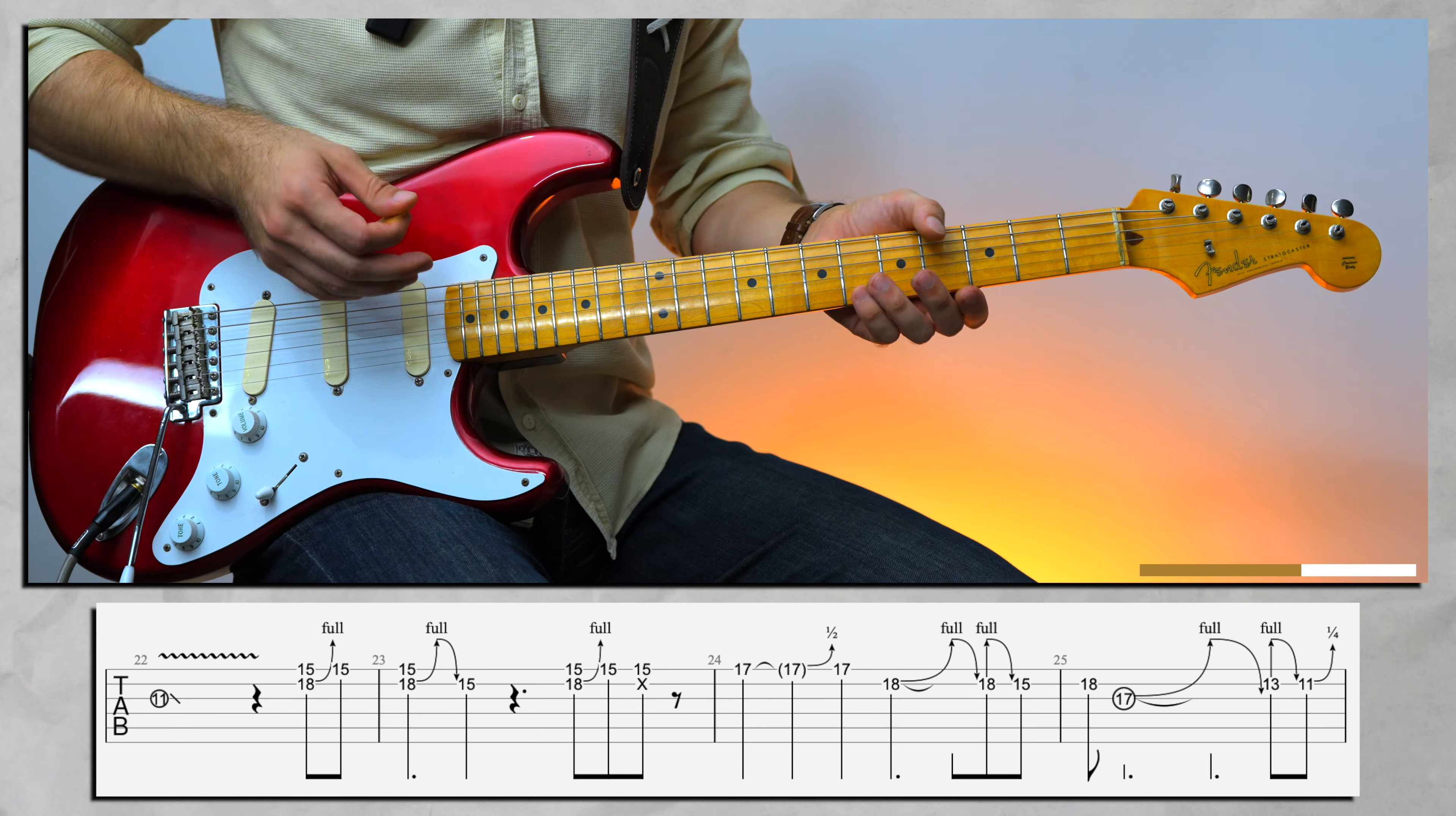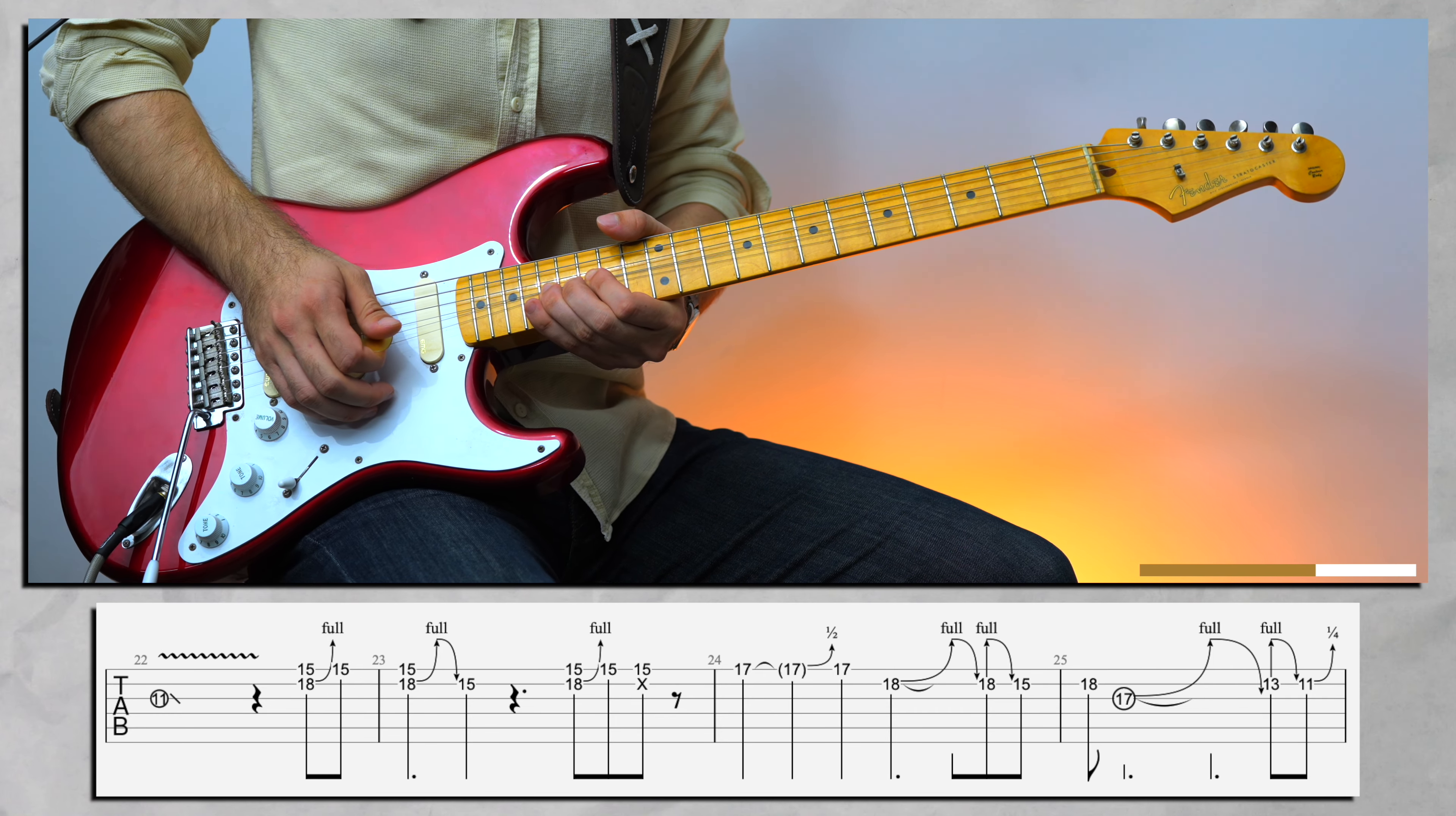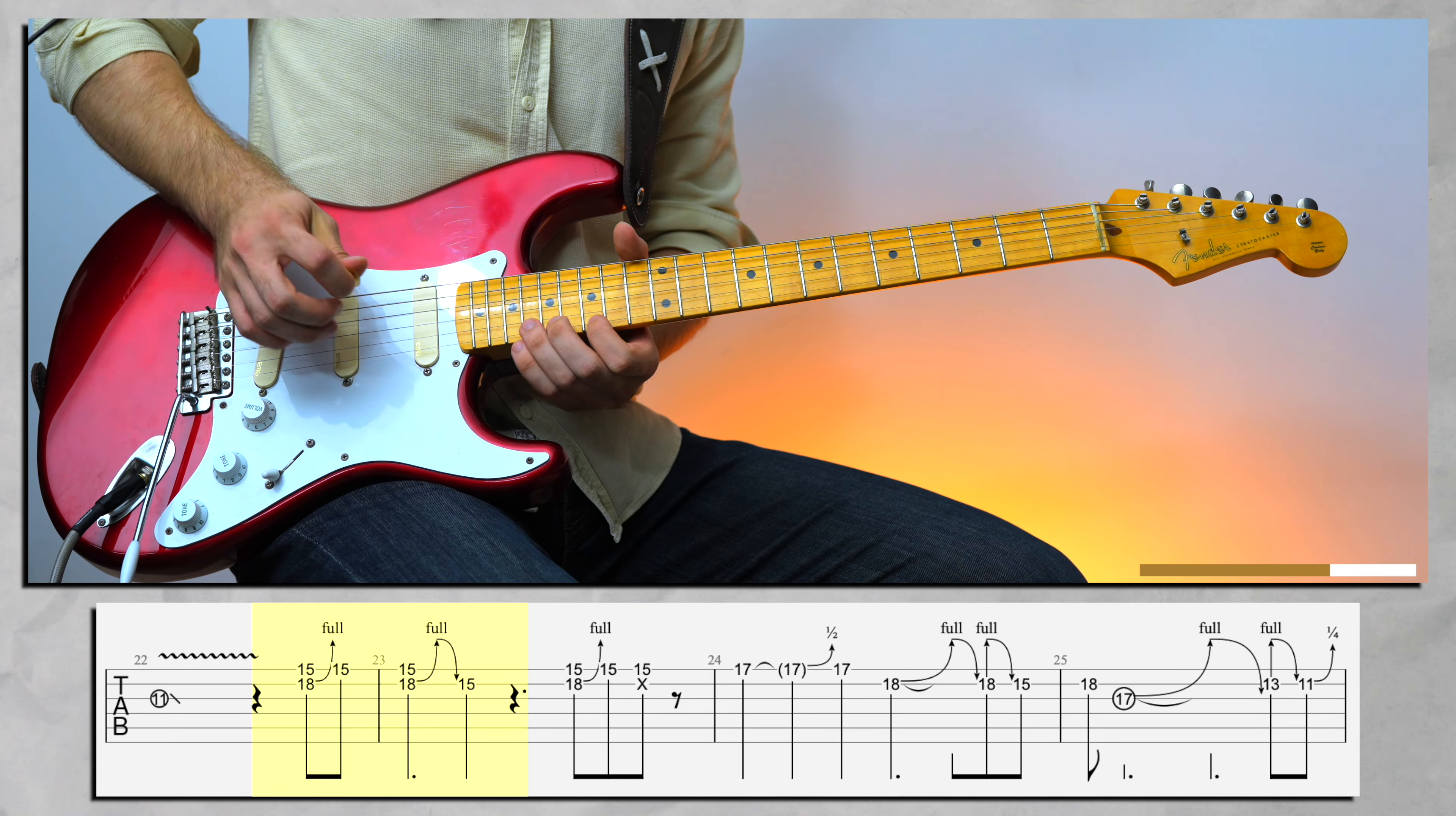All right, so the last technique I'm going to talk about is unison bends in Shine on a Crazy Diamond. David Gilmour does a lot of these. This is from Comfortably Numb Pulse version and you hear these on Pigs too, Pigs intro. You're gonna do this quite a bit.